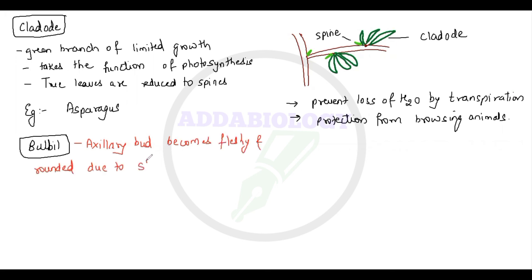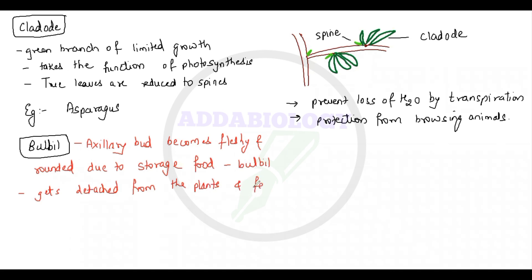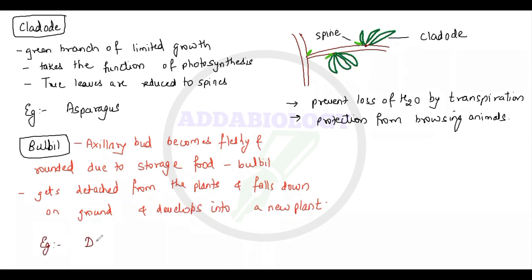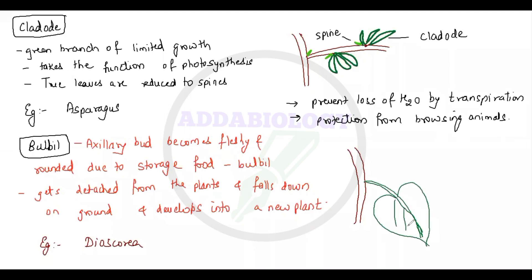The last example is the bulbil. In a bulbil, the axillary bud becomes fleshy and rounded due to storage of food. Once it has grown up in size, it gets detached, falls down, and grows into a new plant. This modification is for perennation. The example is Dioscorea.